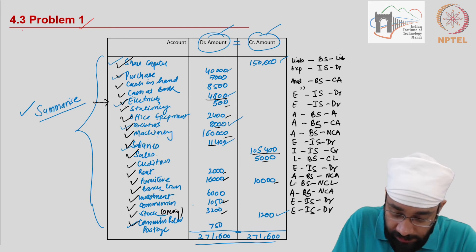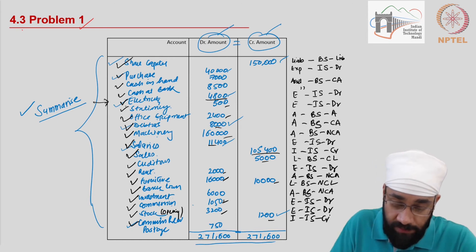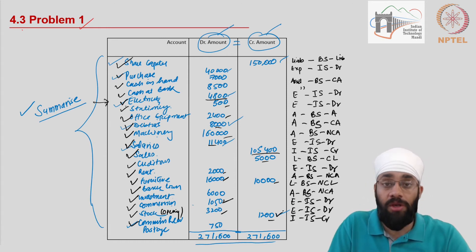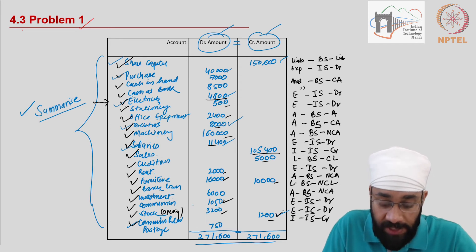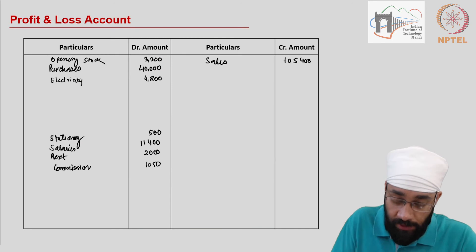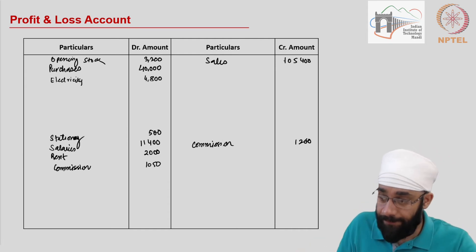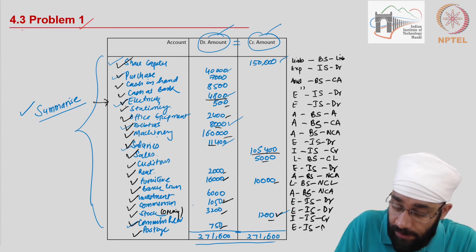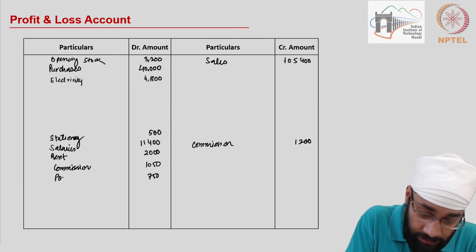Then you have commission received 1,200 — this is an income in the income statement on the credit side. Commission was earlier given on the debit side as an expense; now it is given on the credit side because all incomes have credit balances. Commission received 1,200. Finally, you have postage 750 — this is an expense going to the income statement debit side — postage 750.